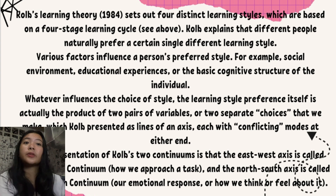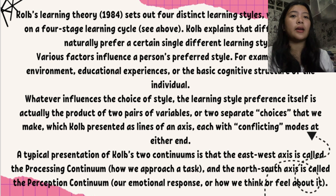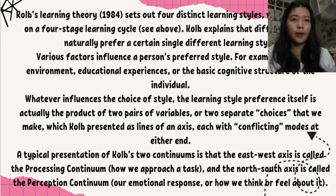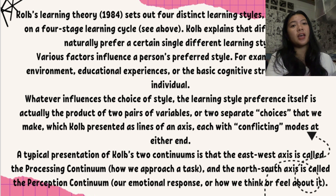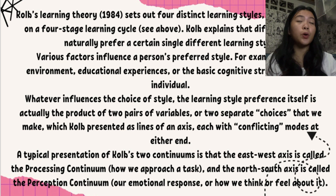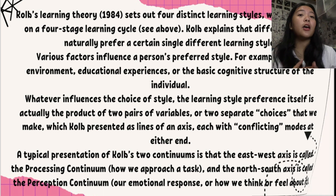Kolb explained that different people naturally prefer a certain single learning style. We are all unique and have our own preferences. The learning style preference itself is the product of two pairs of variables — two separate choices we make — which Kolb presented as lines of axis, each with conflicting modes at either end. Before we dive into the chart, let us first discuss the four stages.